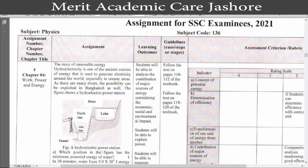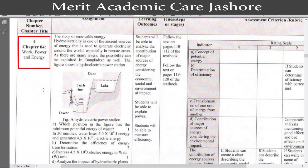At first, we see the assignment instruction. Dear students, on the screen you can see the instruction of your assignments. This is your fourth assignment of physics, from the fourth chapter: Work, Power and Energy. Our assignment headline is the history of renewable energy. Our assignment is: Hydroelectricity is one of the ancient sources of energy that is used to generate electricity around the world, especially in remote areas.